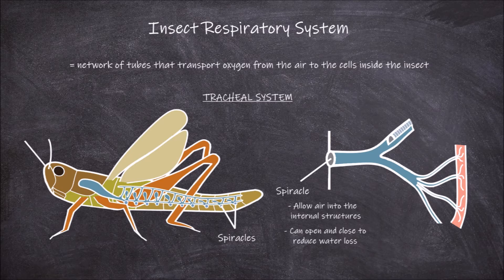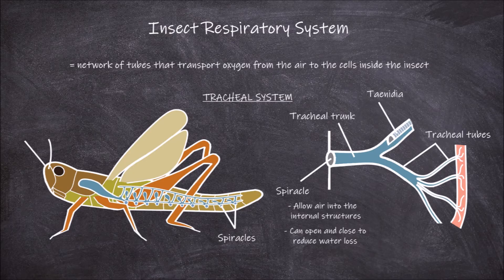Inside, leading from the spiracles, you firstly have the tracheal trunk, which then leads into a network of increasingly smaller tracheal tubes. The tracheal tubes are lined with a reinforcing cuticle called the taenidia.